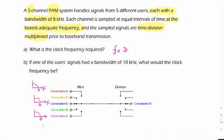So the sampling rate will have to be at least the Nyquist rate, which is twice the highest frequency, which is 2 times 8, 16 kHz.